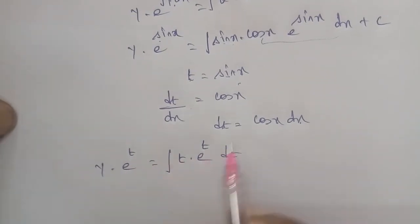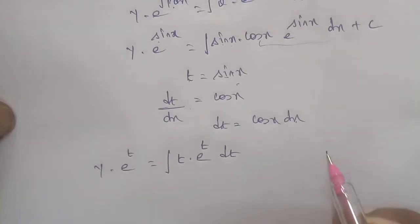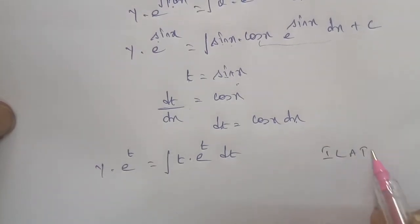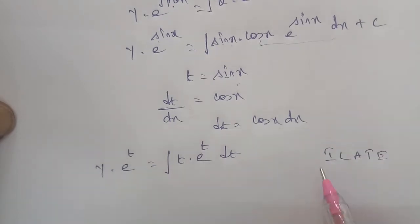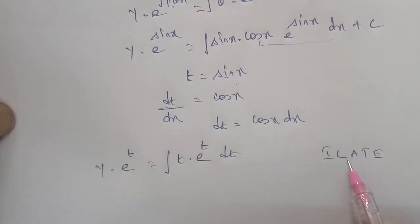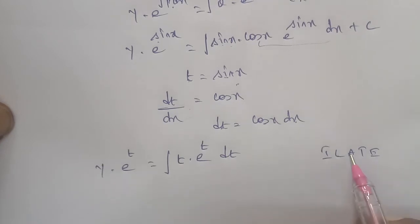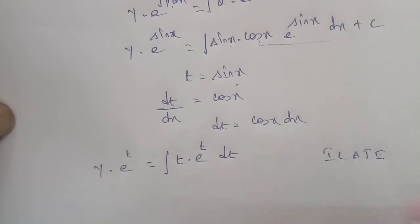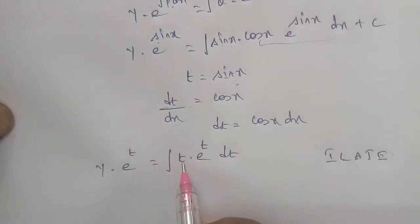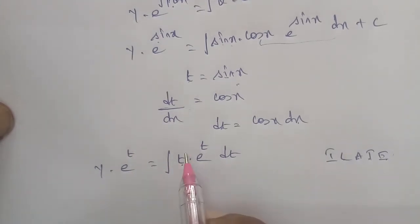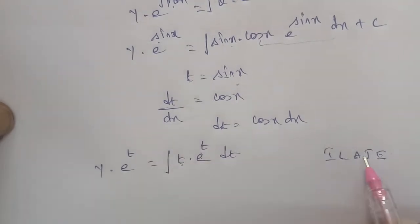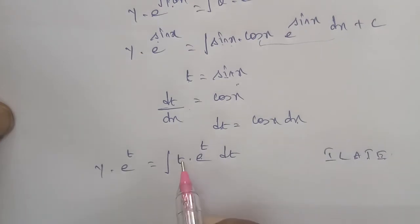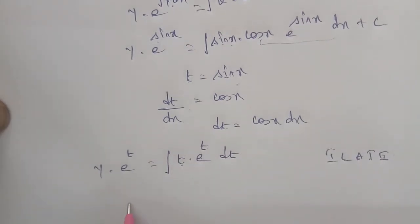This is a UDV format, so we use integration by parts. Using the ILATE rule: I for inverse trigonometry, L for logarithmic, A for algebraic, T for trigonometric, E for exponential. Here t is algebraic and e power of t is exponential. So by ILATE, U is the algebraic function and DV is the exponential.